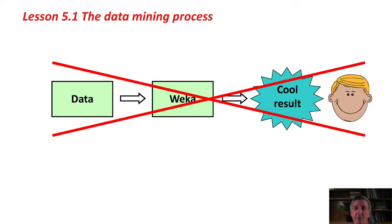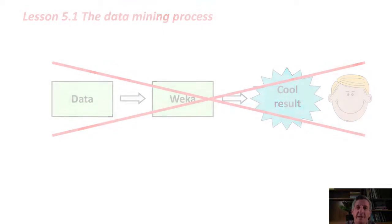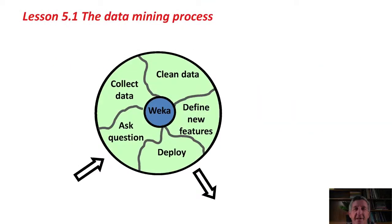Really, this would be a better way to think about this. You can have a circle — you're going to go round and round the circle. It's true that Weka is important; it's in the very middle of the circle here and it's going to be crucial, but it's only a small part of what you have to do.